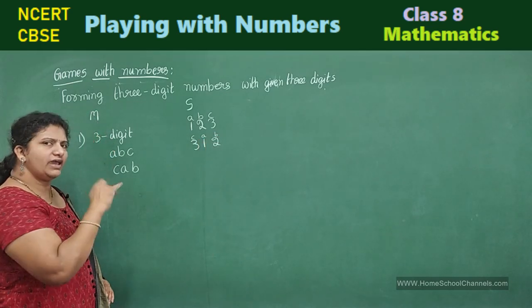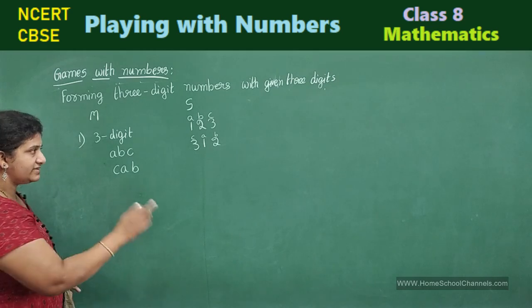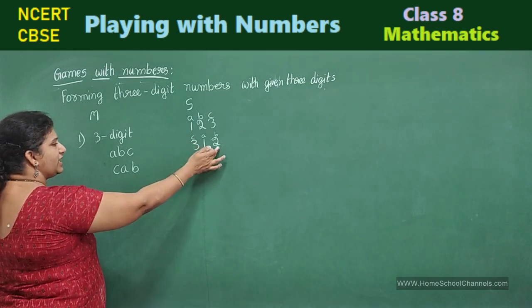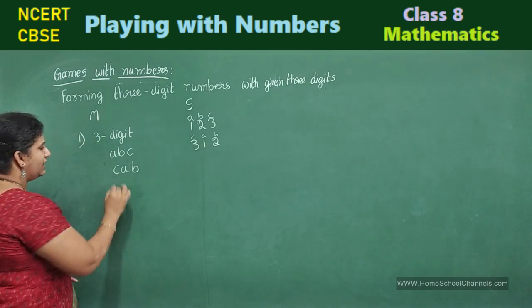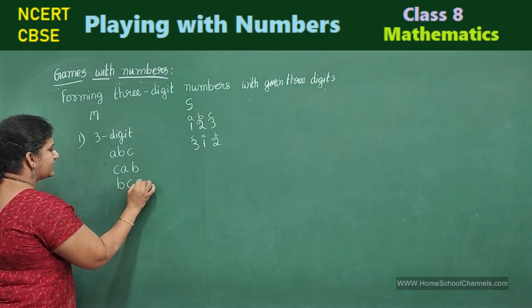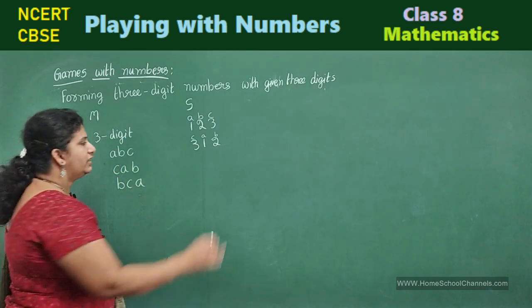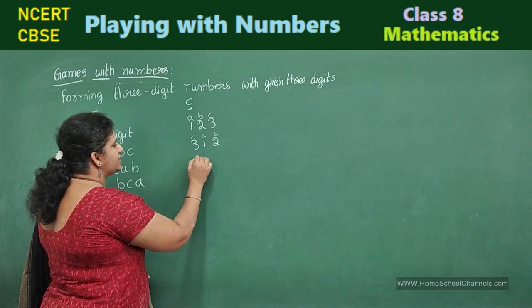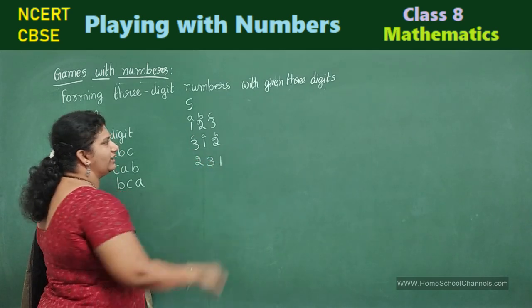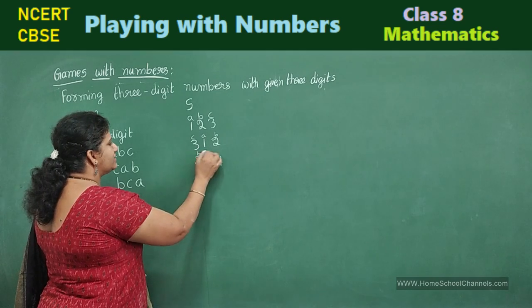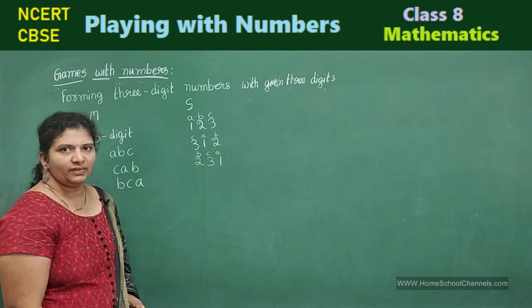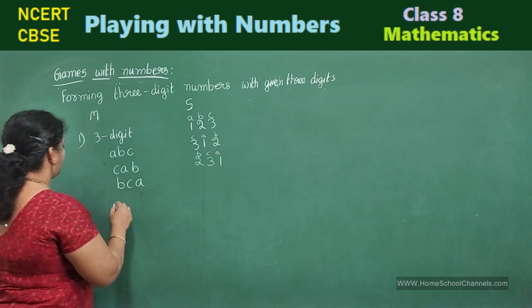And again, she says, now again rearrange this number. In such a way, this B number should come this side. That means, B, C, A. B number bring this side means, 231. B, C, A. Now, next step.